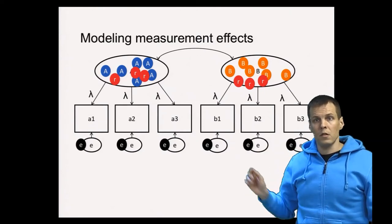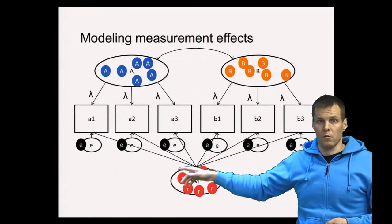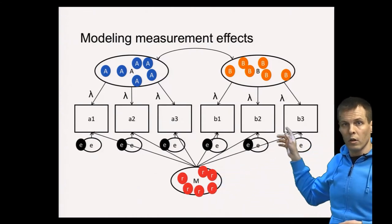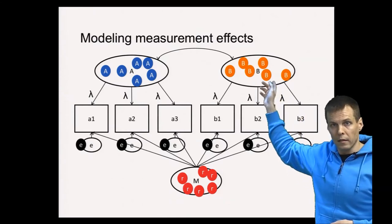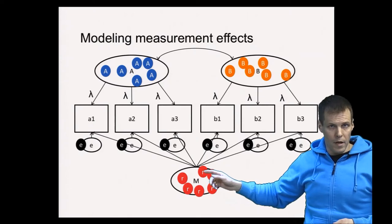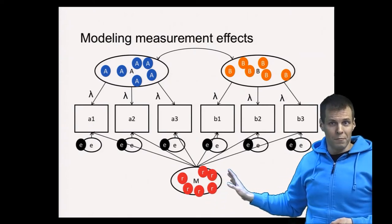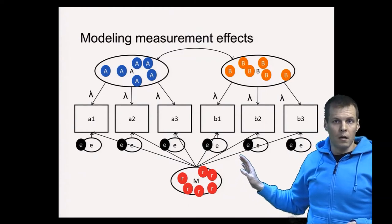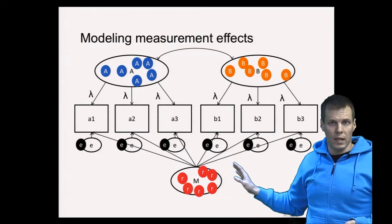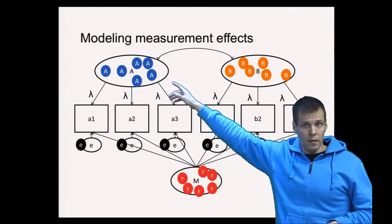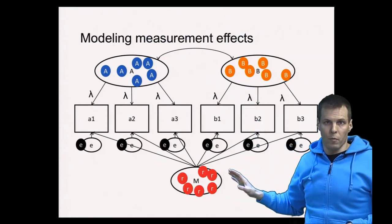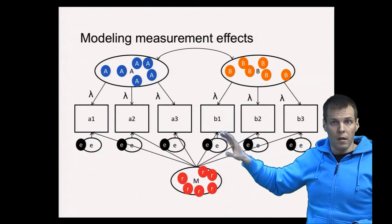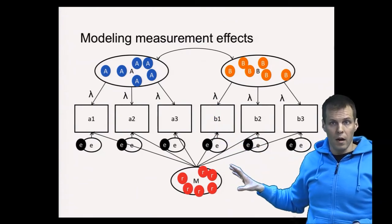This looks appealing but it is not a panacea for method variance problems — this kind of model is problematic to estimate. The reason is that a high correlation between A and B is nearly indistinguishable from A1, A2, A3, B1, B2, B3 simply being caused by one factor. They are empirically nearly impossible to distinguish, making this model very unstable. In practice, these models have been shown to be problematic even with simulated data sets.